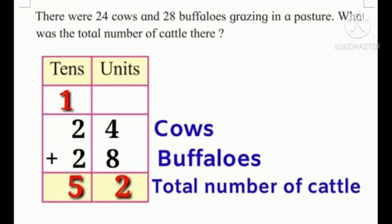Next example. There were 24 cows and 28 buffaloes grazing in a pasture. What was the total number of cattle there? In this example we have to find out the total number of cattle. So let us first add 24 cows and 28 buffaloes. First add in the unit place: 4 plus 8 is equal to 12. So we write 2 in the unit place and 1 carried over in the tens place. Now in the tens column: 1 plus 2 plus 2 is equal to 5 tens. So there were a total of 52 cattle.